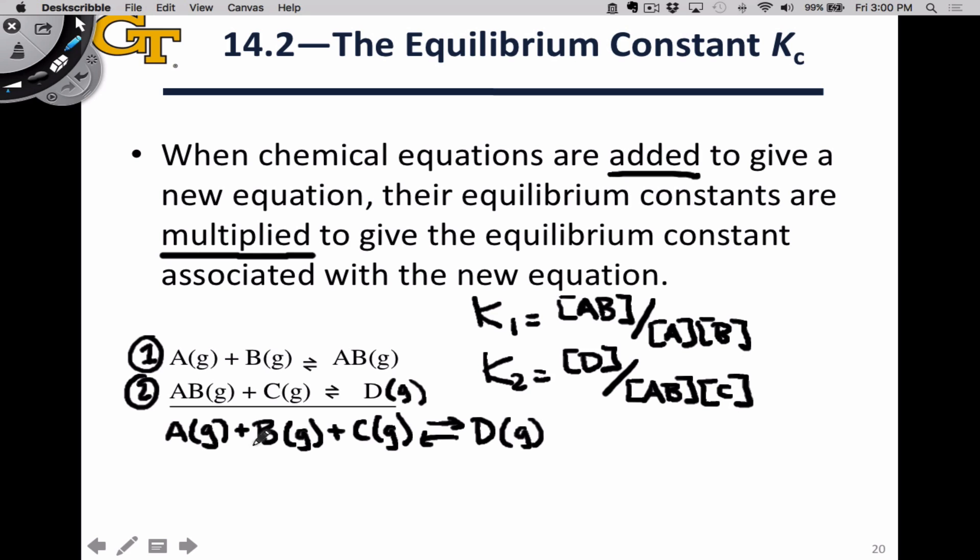And we can actually write a combined equilibrium constant for this reaction without even looking at K1 and K2. Let's call it K3. We don't even need to look at K1 and K2 to write an equilibrium expression for this. We can simply look at what are the reactants and products and what are their coefficients. We have D as a product, we have A, B, and C as reactants.